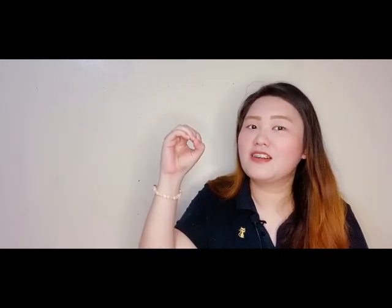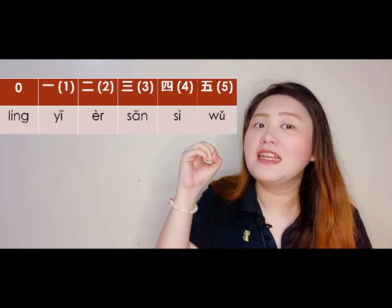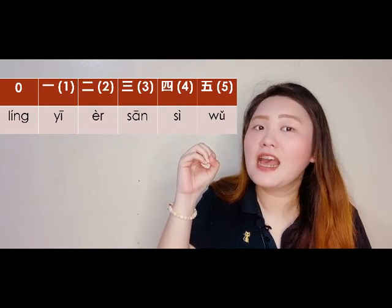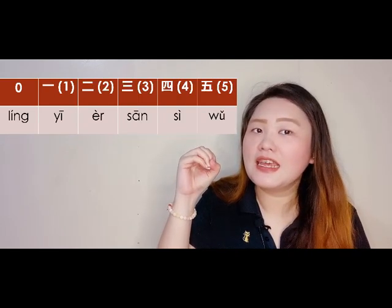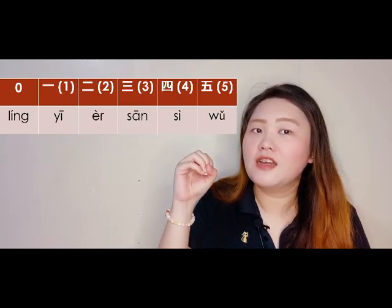So let's review from zero to ten: 零 (líng), 一 (yī), 二 (èr), 三 (sān), 四 (sì), 五 (wǔ), 六 (liù), 七 (qī), 八 (bā), 九 (jiǔ), 十 (shí).